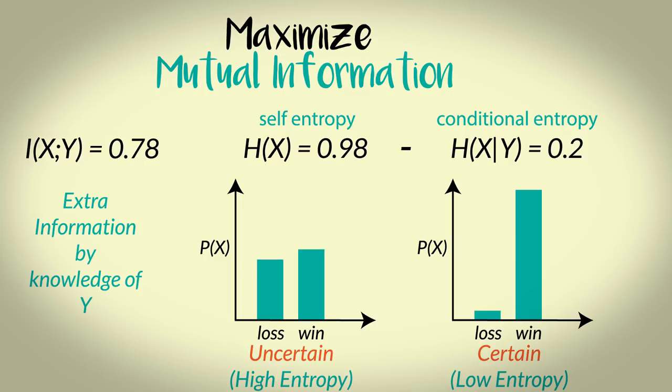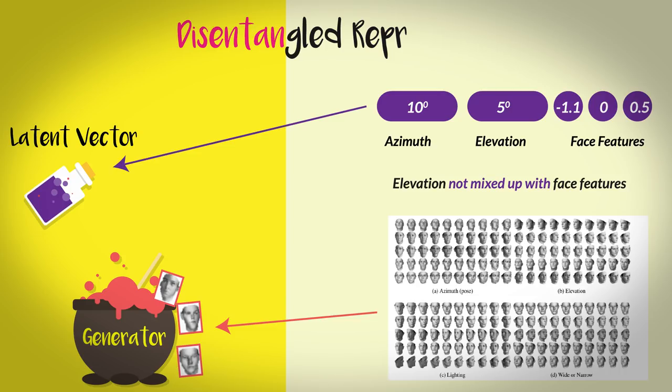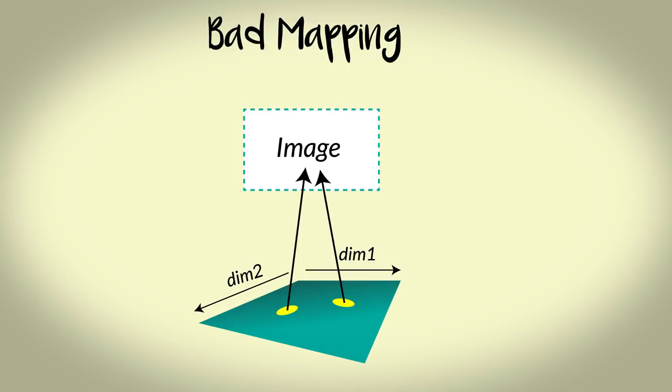This yields us a term which has less entropy or more confidence. Here, we want to maximize the mutual information between the latent vector and the generated image. This means the latent vector and the image should be approximately mapping. That's because the knowledge of the image will directly correspond to the knowledge of latent vector, unlike the normal GANs where the same image can be mapped to or entangled to multiple latent vectors or many regions in the latent space.